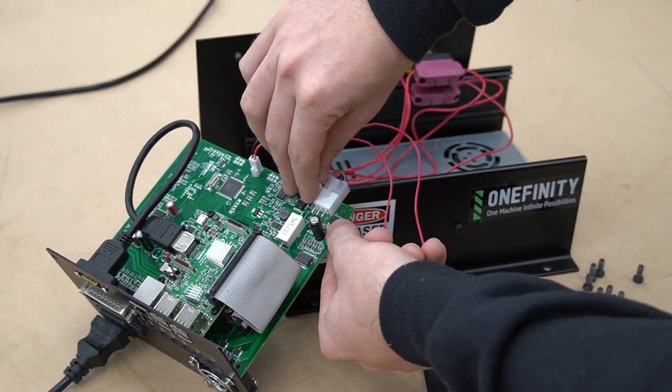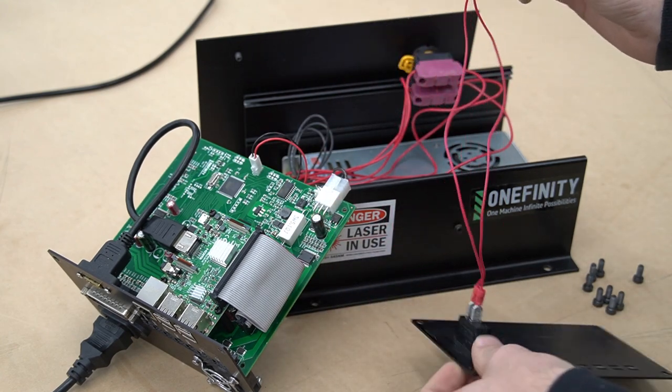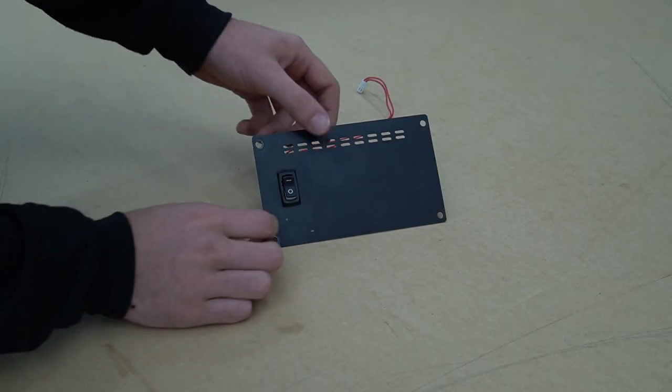Now we'll unplug our power switch from the board. The wires are both red, not to be confused with the black and red wires of the fan.